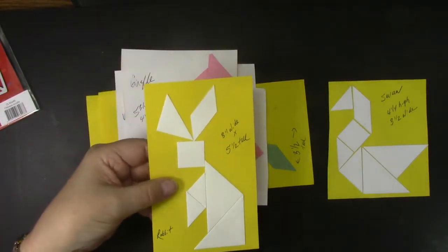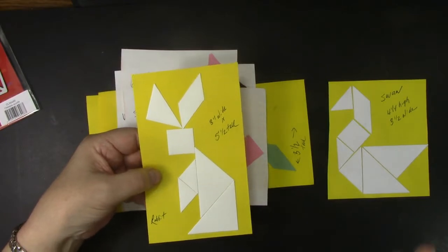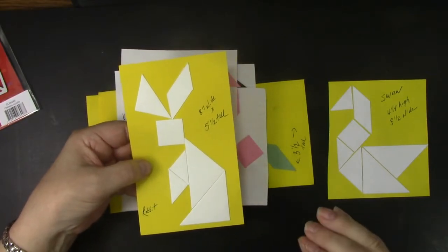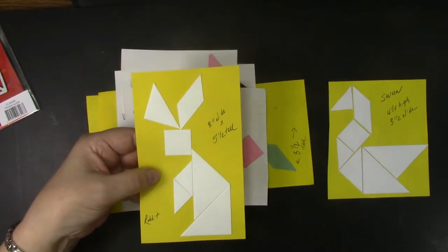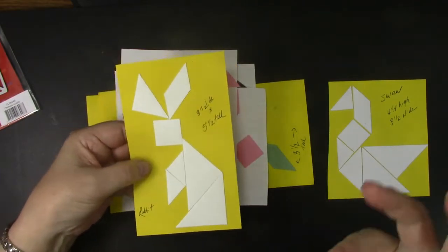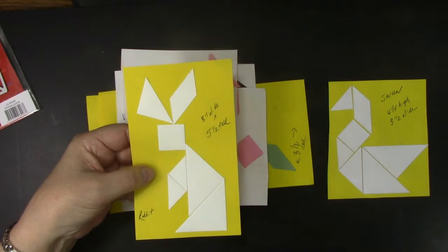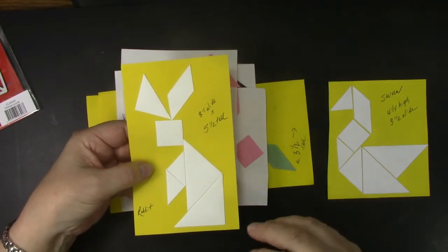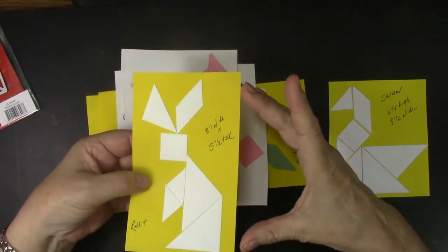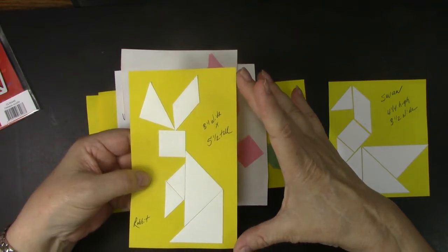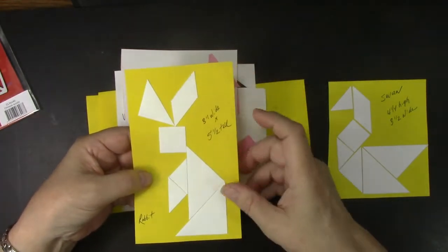And here is a rabbit. What amazes me is they take the same seven pieces and you come up with obviously animals and objects and everything. And they're all different sizes too. So it's the same seven original pieces. But now this one and that's why I made a note here. This one is five and a half inches tall by three inches wide.